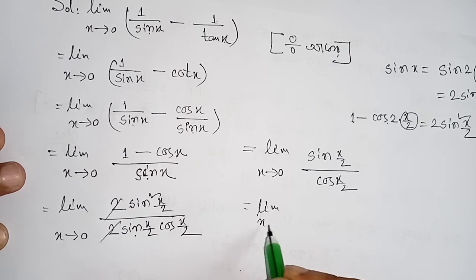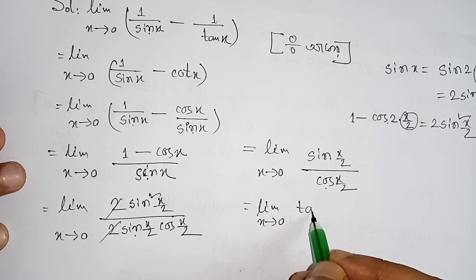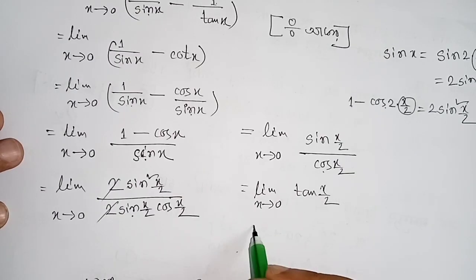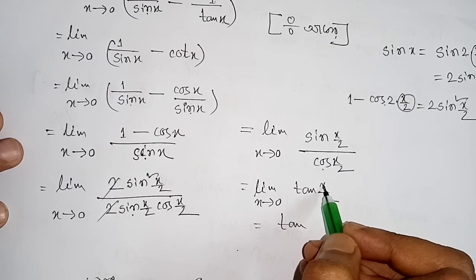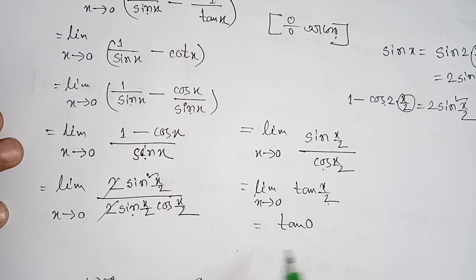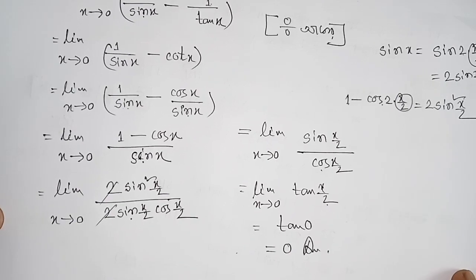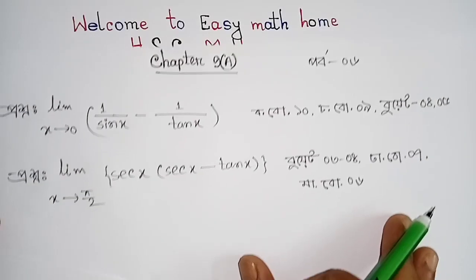After cancellation we get limit x→0 of sin(x/2)/cos(x/2), which equals tan(x/2). Now substituting directly: tan(0/2) = tan(0) = 0. So the answer is 0.